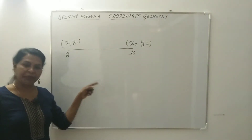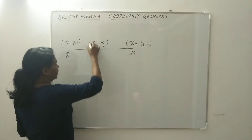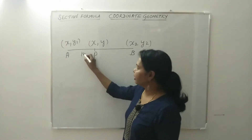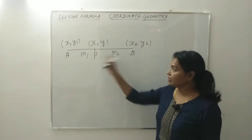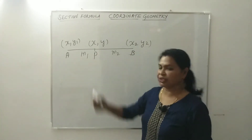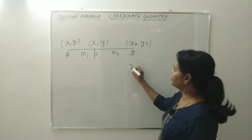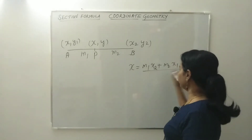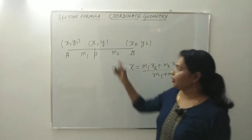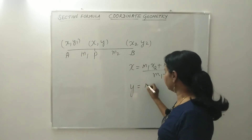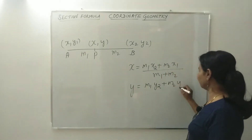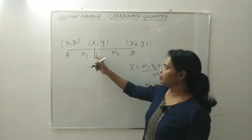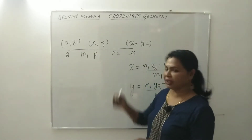Let P be a point on AB with the coordinate x, y, and P divides AB in the ratio M1 is to M2. So you can find this x coordinate by using this formula: x equals M1·x2 plus M2·x1 divided by M1 plus M2. And you can find this y coordinate using M1·y2 plus M2·y1 divided by M1 plus M2. This is the section formula.